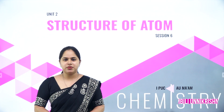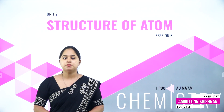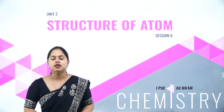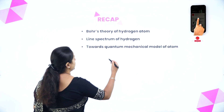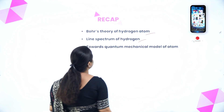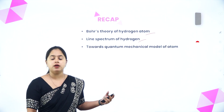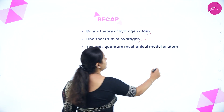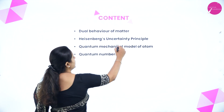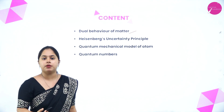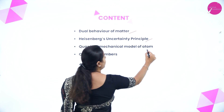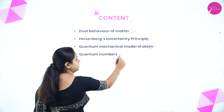Hello everyone, this is Ampli Unikrishnan from the Department of Chemistry, Vidyashram Pre-University College, Mysore. We are back with Session 6 of the chapter Structure of Atom. In the last session we discussed Bohr's theory of hydrogen atom and the line spectrum of hydrogen. In this session we will discuss the dual behavior of matter, Heisenberg's uncertainty principle, the quantum mechanical model of atom, and quantum numbers.